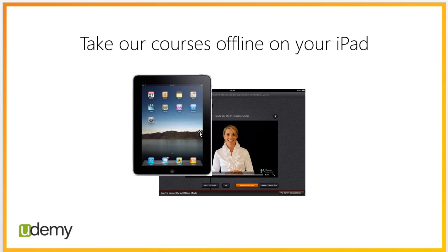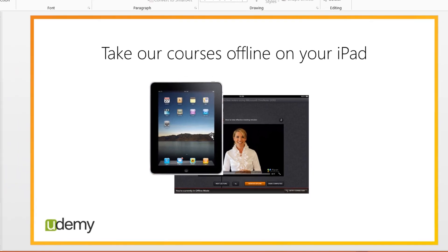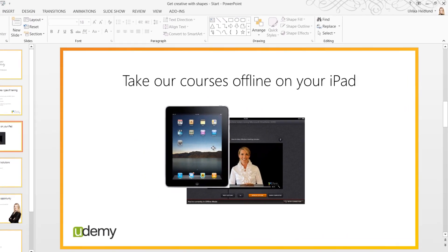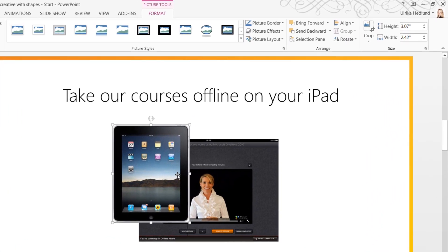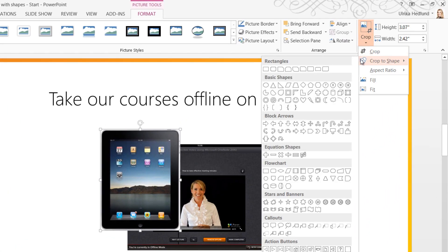So instead of using the normal crop tool, I'm going to use Crop to Shape and use a rounded rectangle shape. To use Crop to Shape, mark the object and on the Format tab click Crop and then Crop to Shape. Here I'll select a rectangle with rounded corners.